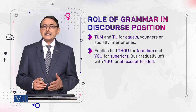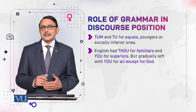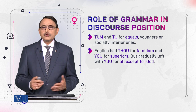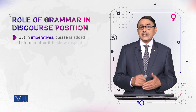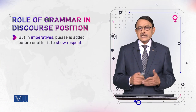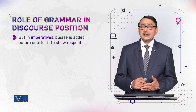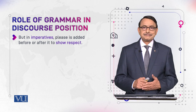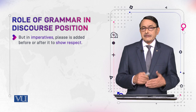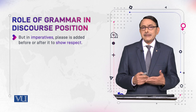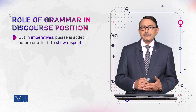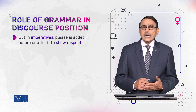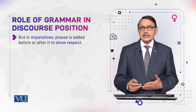So actually there is only one second person in English, whereas in Urdu there are two. But in imperatives in the English language, 'please' is added to show respect — either before the imperative, like 'Please have a seat', or at the end, like 'Have a seat, please'.